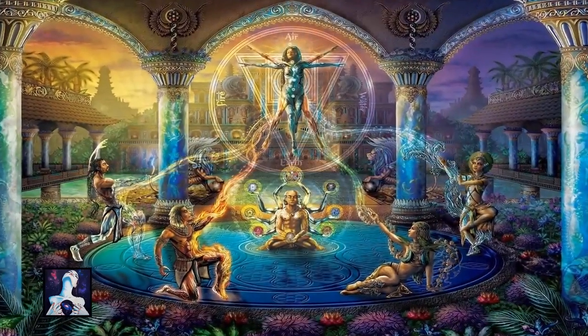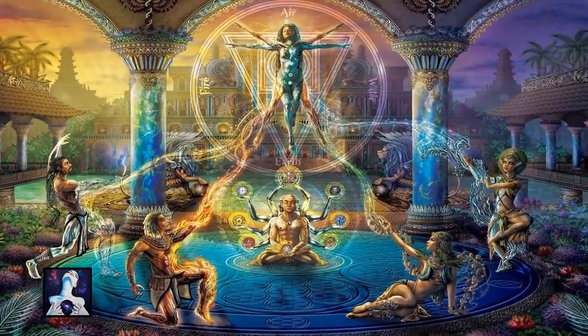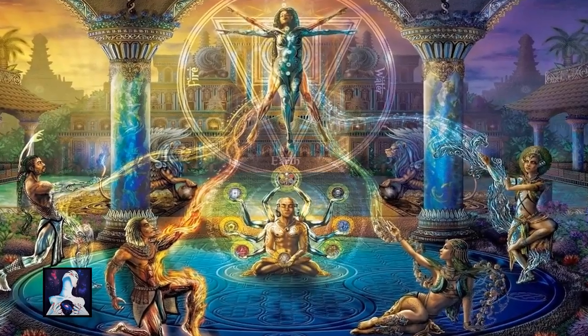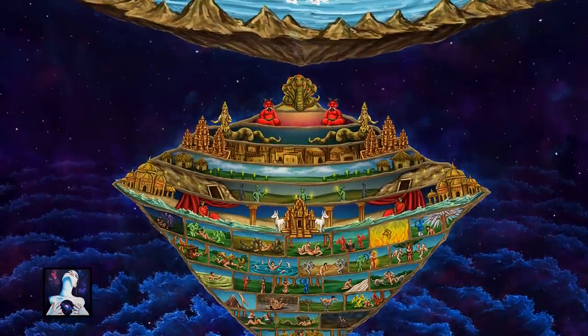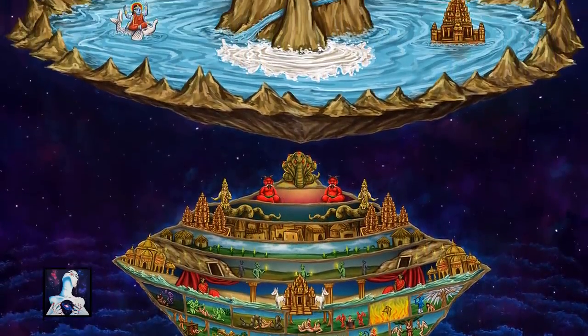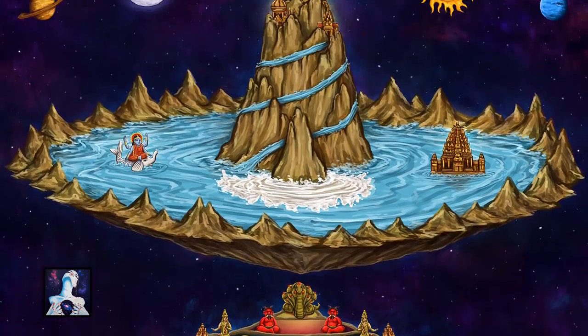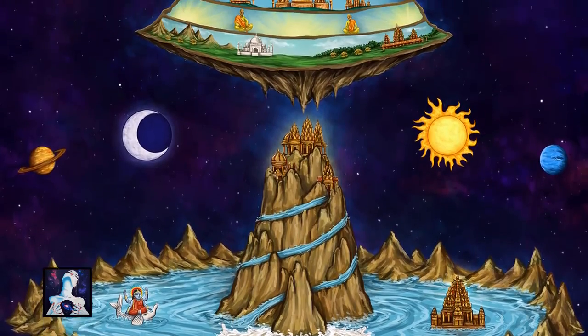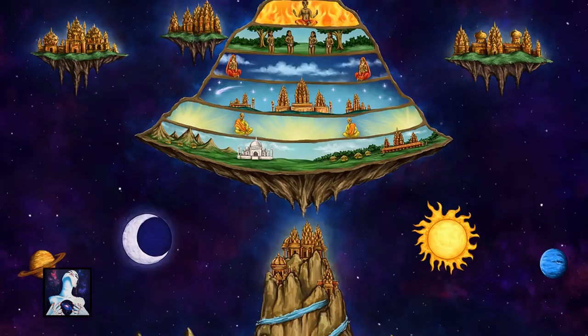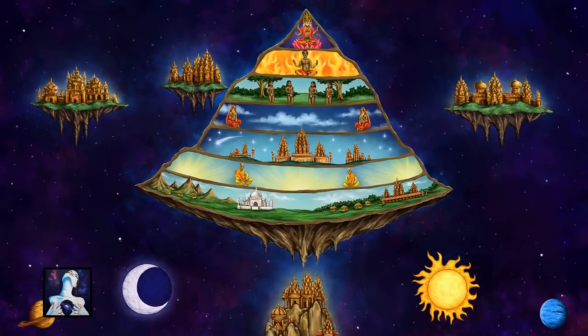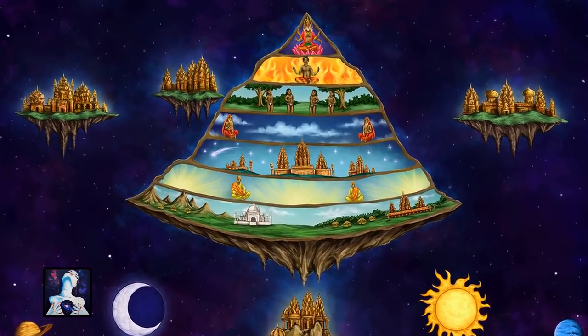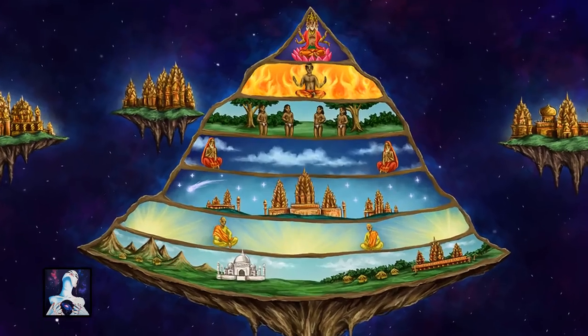Eastern spiritual science describes seven planes. The lower planes express more of the matter aspect and are therefore more material, and the higher planes express more of the energy aspect and are therefore more subtle. The seven planes are not specific locations.